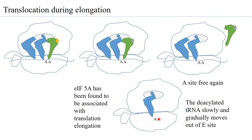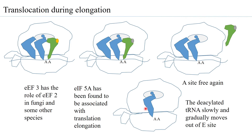It has been observed that initiation factor IF5A is associated with translation elongation. EF3 plays the role of EF2 in certain fungi and other species — in those species EF3 does the same job as EF2 does generally. EF2 is equivalent to EFG of the prokaryotic system.